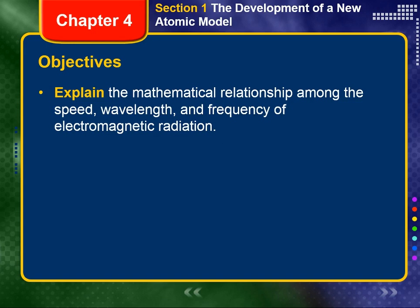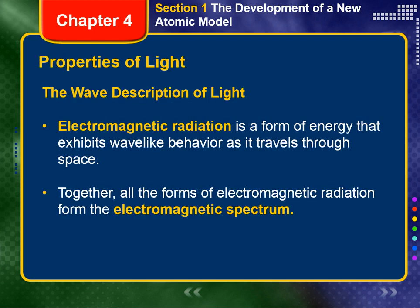At the end of this video, you should be able to explain the mathematical relationship among speed, wavelength, and frequency of electromagnetic radiation. Chapter 4, Section 1: The Development of a New Atomic Model.